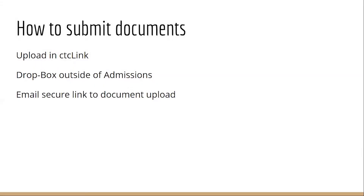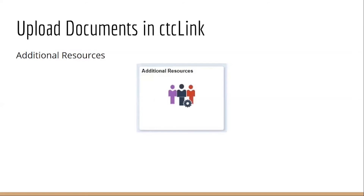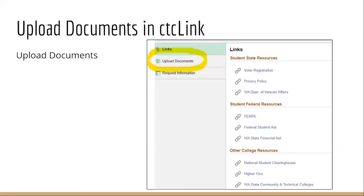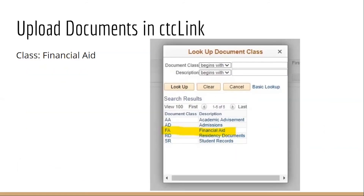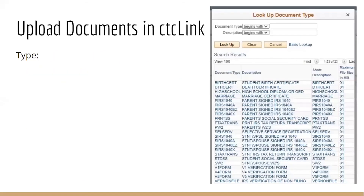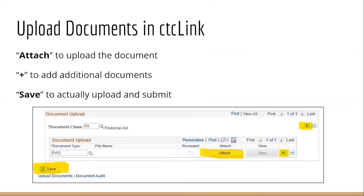To submit documents online in CTCLink, you can simply upload — which we'll show in just a moment. There is a drop box outside of the admissions building on campus, and there's a secure link that we can send to you to upload documents as well. To upload documents in CTCLink, you click on the additional resources tile, then click upload documents on the left. First, you'll be selecting which department you want these documents to go to. In the document type, you're telling them what type of document you're about to upload — first selecting financial aid as your department, then selecting which type of document you're uploading. Finally, you'll click attach and choose the document from your device, and then click save.